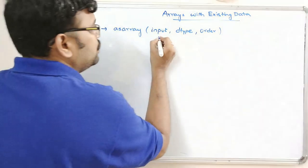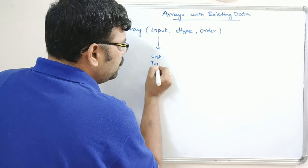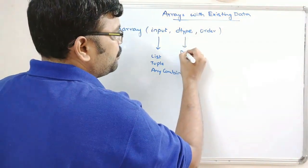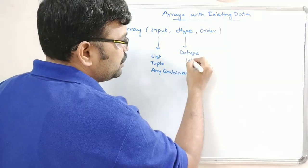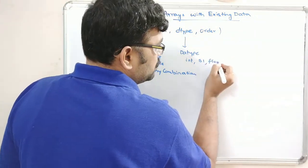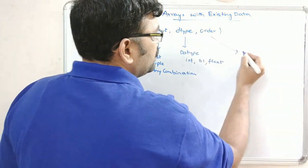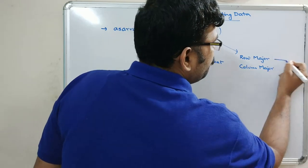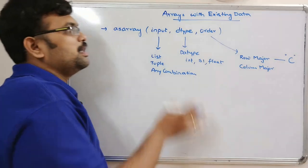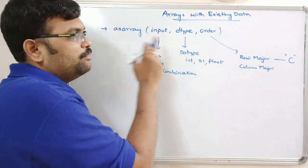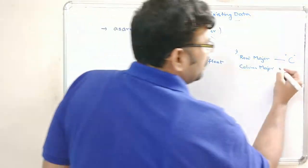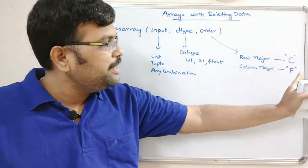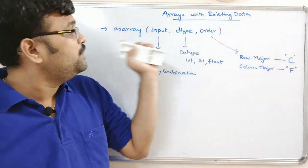The input can be a list, a tuple, or any combination. The data type can be integer, float, string bytes, or others. The order specifies row major or column major storage. If you specify capital C in quotes the array will be in row major order; capital F gives column major order.